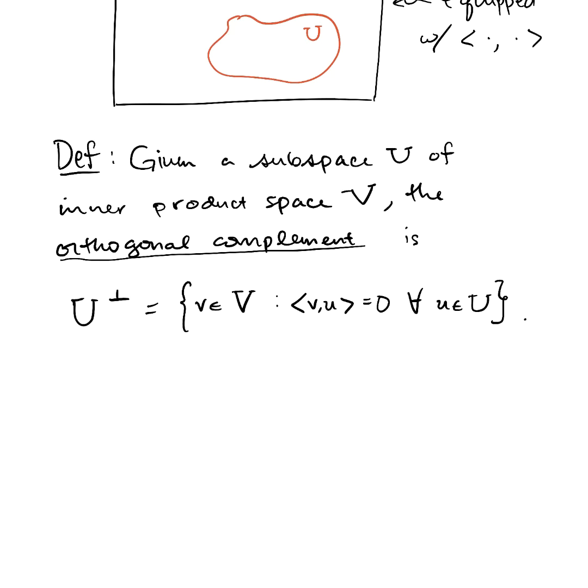And furthermore, because we have additivity and homogeneity in the first slot, if little v belongs to U-perp, so does 5 little v. And if little v and little w belong to U-perp, so does v plus w. In other words, U-perp is a subspace. Even if U itself was merely a subset, U-perp is for sure a subspace. And that's the first of a number of basic properties of the orthogonal complement. So let's just write these down.